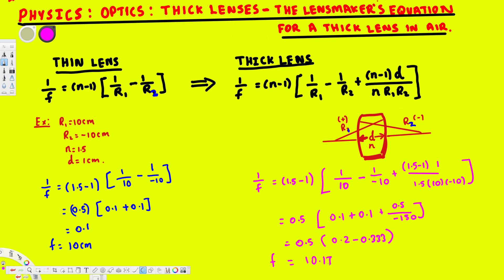You can see there is a difference due to the d value. We don't get the same answer, and that is the difference between the thin lens equation and the thick lens maker's equation. I hope this helps, thanks for watching.